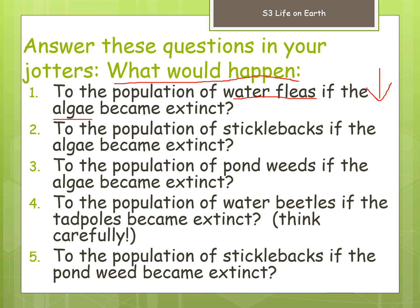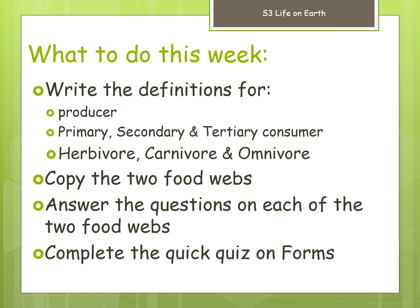That's my video lesson complete for the week. Your tasks: write down the definitions for the keywords — producer, primary, secondary and tertiary consumer, herbivore, carnivore, and omnivore. Copy out the two food webs — electronic versions are available if you want to print them. Answer the questions on each food web: for the first, write down the individual food chains; for the second, explain what happens to organisms when something changes. Then complete the quick quiz on Forms attached to Show My Homework and Teams. Hope you've enjoyed your second S3 Biology lesson — any problems, drop me a line on Teams. Cheers, bye.